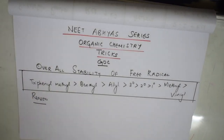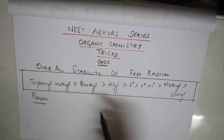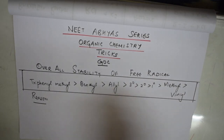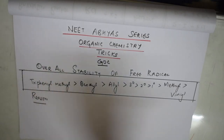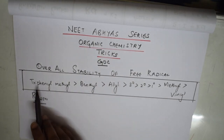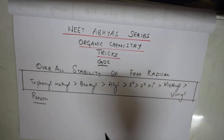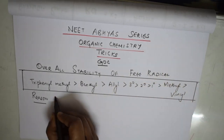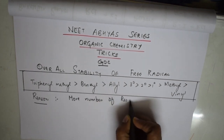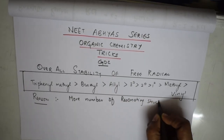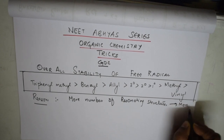Starting with General Organic Chemistry: the first question is about overall stability of free radicals. In the exam they may ask you to arrange them in order. The most important thing to remember is: the one with maximum resonating structures is more stable. Among all given species, triphenylmethyl has three benzene rings, so more resonating structures, making it more stable. Next comes benzyl, then allyl, and the least stable is vinyl.